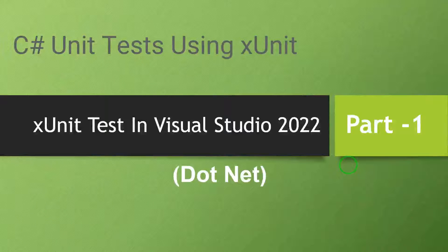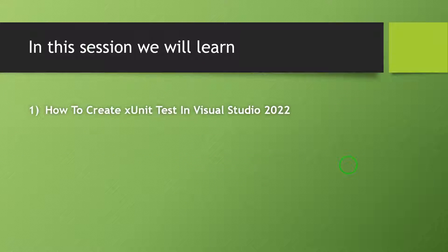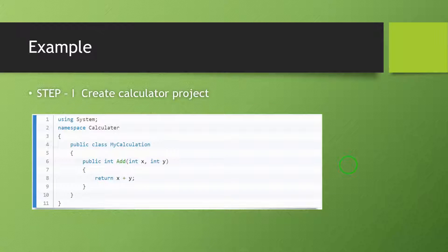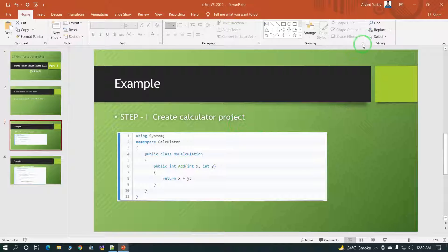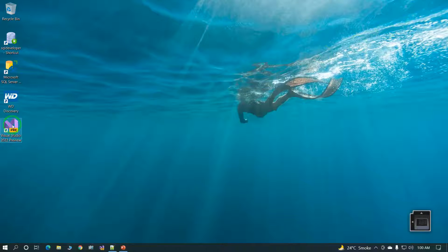Welcome to this session on XUnit testing in Visual Studio 2022. In this session we will learn how to write XUnit tests. First, we will create a calculator project with an add method that takes two parameters, int x and int y, and returns their addition. Once that is done, we will write test cases for the calculator project.